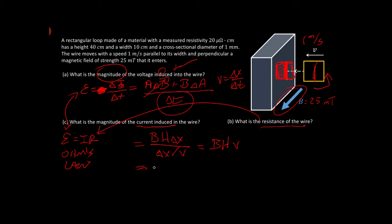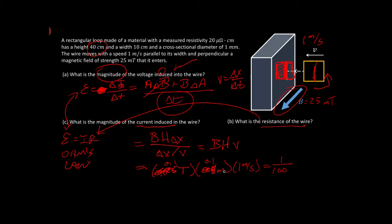So that is going to be B — the field — times the height of the loop times the speed it's going in there. So that is: B is 0.025 Tesla, H is this height, that's 40 centimeters, 0.4 meters, the speed is 1 meter per second. We have 4 times 25, so we have 0.1. This is 0.1 and this is 0.1, so we actually have 1 over 100, which is 10 millivolts. So that's the induced voltage.